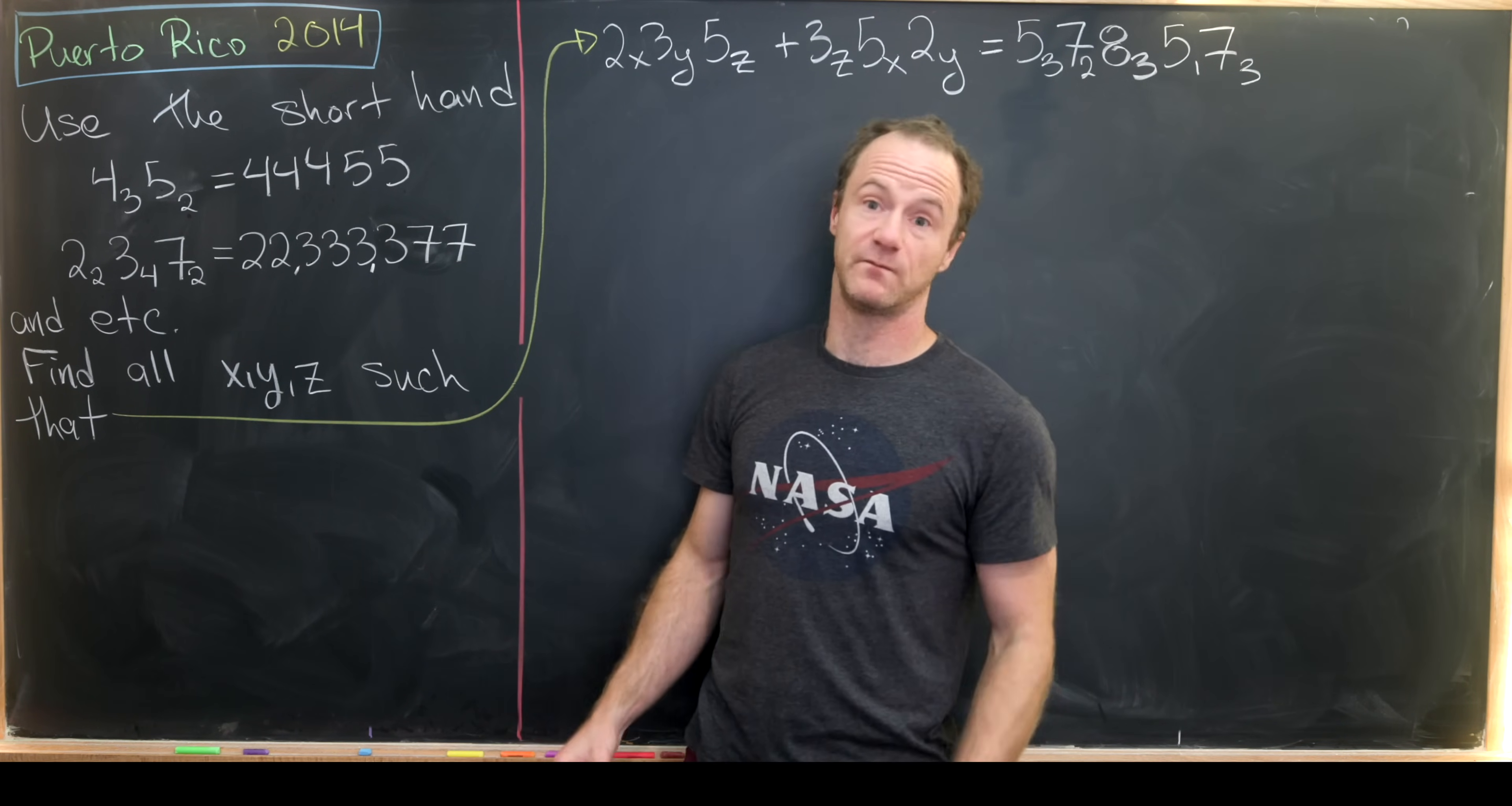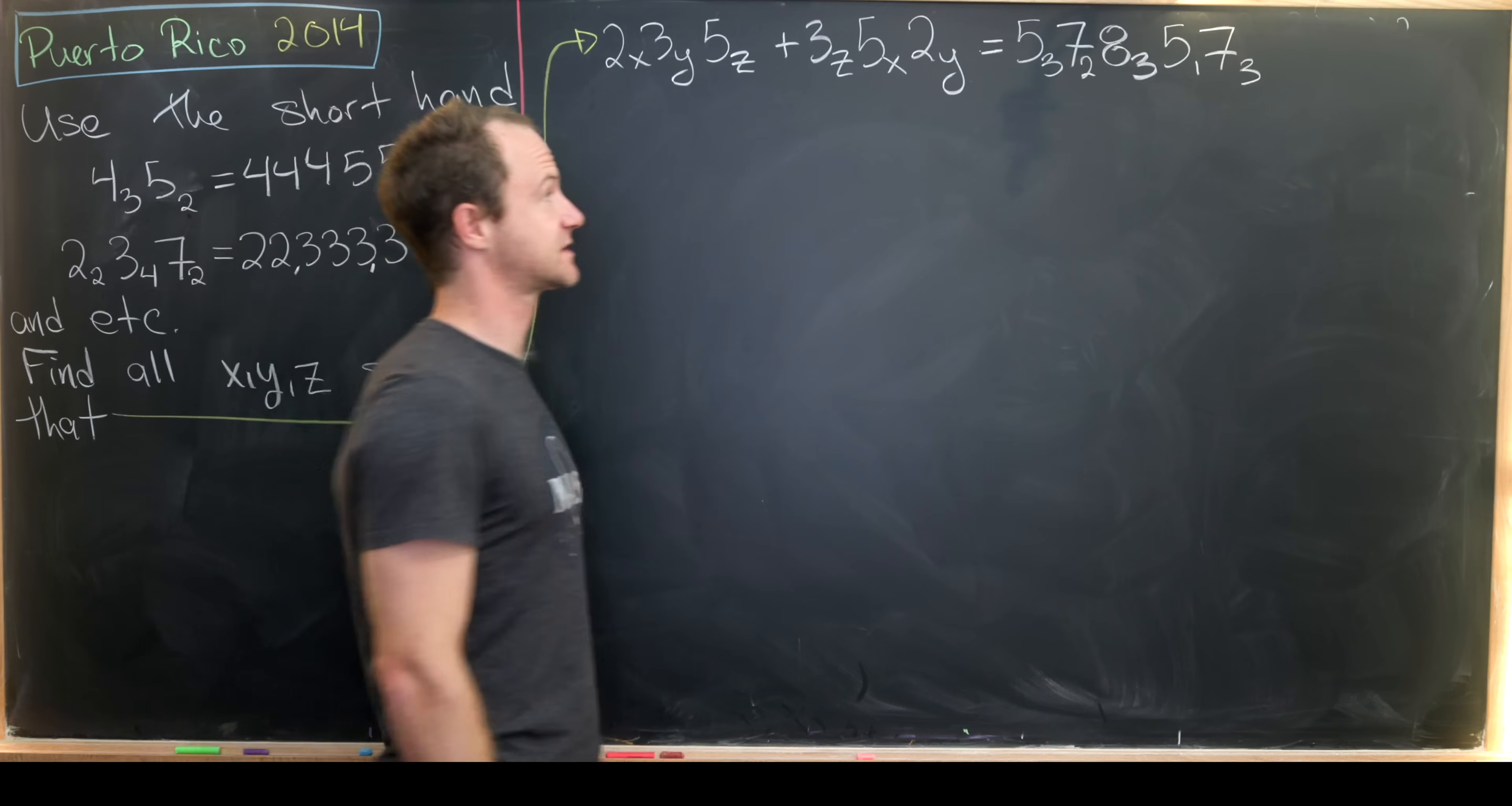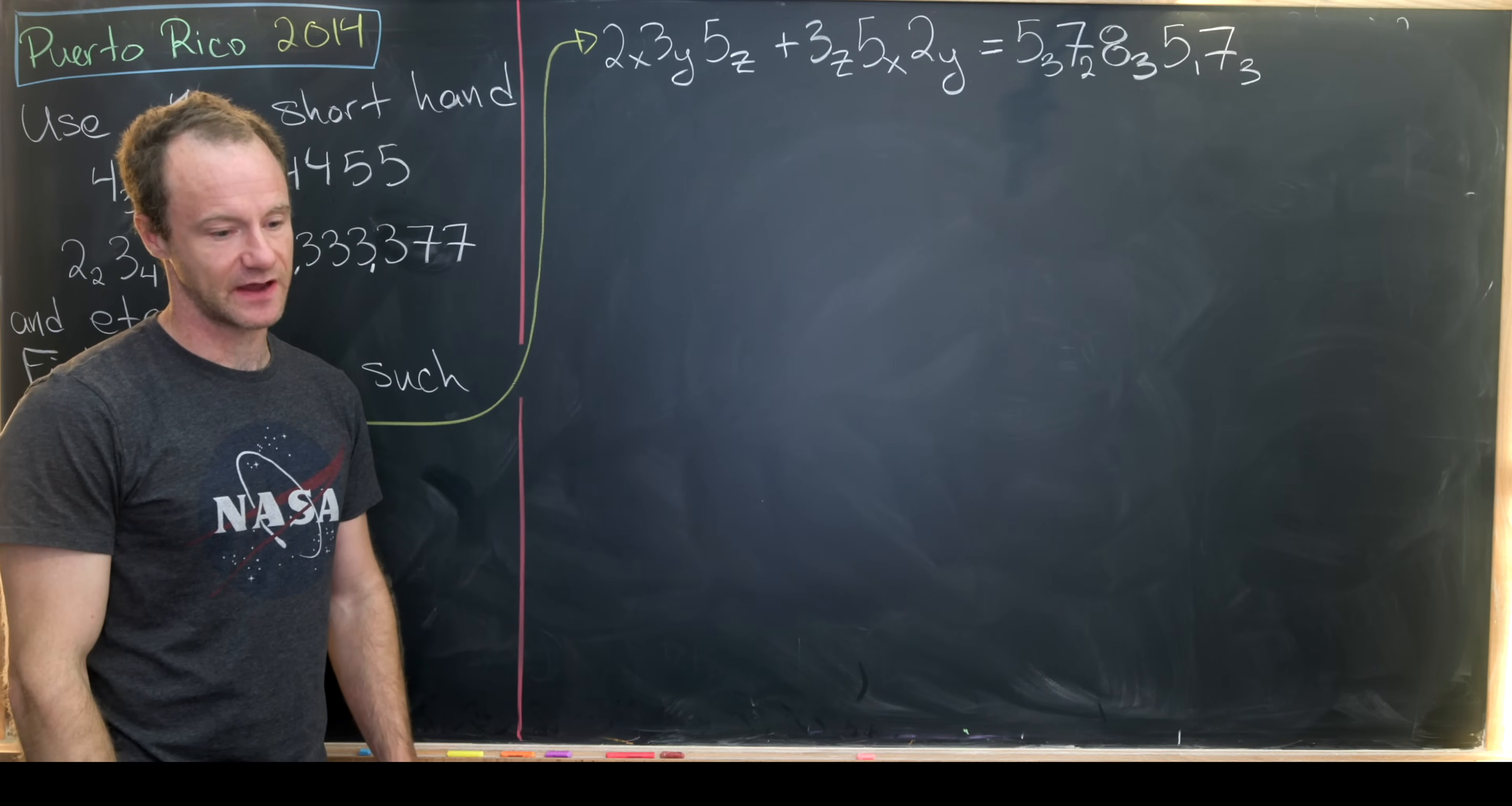Our final goal is to find all numbers x, y, and z so that the following equation holds. We have 2 sub x, 3 sub y, 5 sub z plus 3 sub z, 5 sub x, 2 sub y equals 5 sub 3, 7 sub 2, 8 sub 3, 5 sub 1, 7 sub 3. That's quite a big number. Notice we've got three fives, two sevens, three eights, one five, and then ending with three sevens.